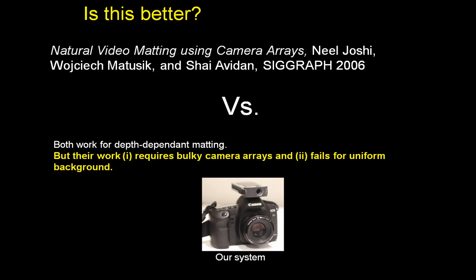Natural video matting technique is another good comparison to our work. They generate a variance map like our invert and compare method and use it to automatically generate tri-map and alpha matte images. Their processing steps are similar to ours, but their system uses eight cameras, making it too bulky compared to our single camera and projector setup. Also, their method can't work for a uniform background.